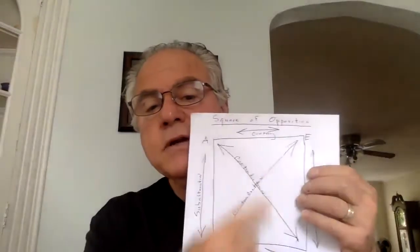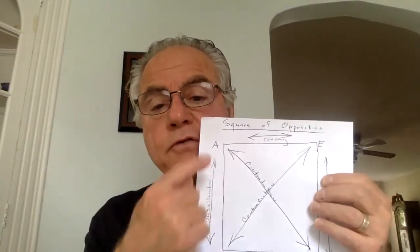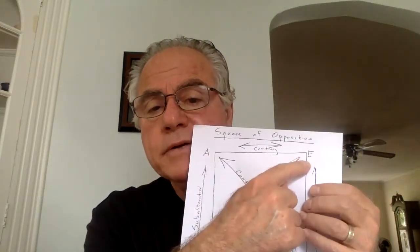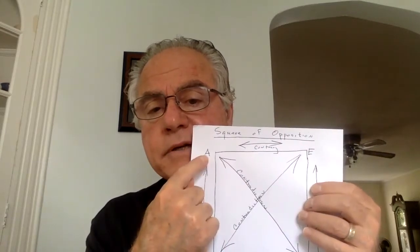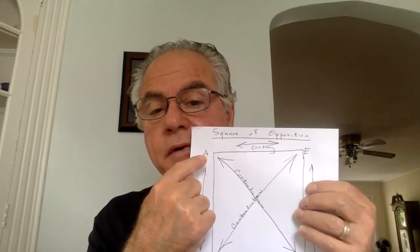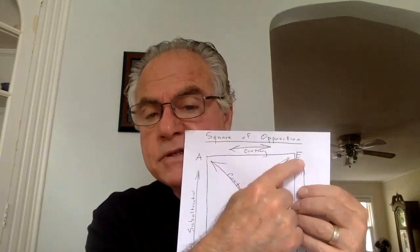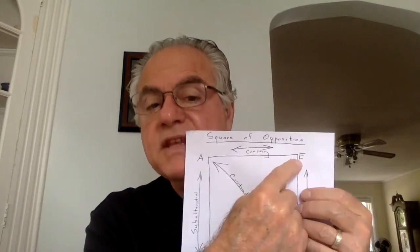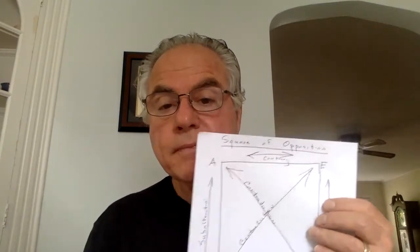In logic, propositions in deductive arguments can be true, false, or undetermined. In inductive arguments they can be highly probable or less probable. Contraries cannot both be true, but they might both be false. So if you know A is false, E is undetermined; if E is false, A is undetermined. You can take a false A proposition, turn it into an E proposition keeping the subject and predicate the same, and that E proposition is undetermined.